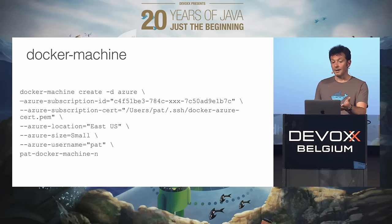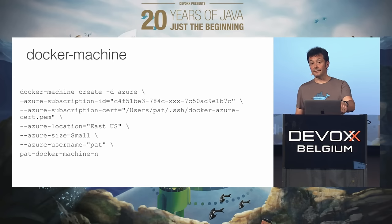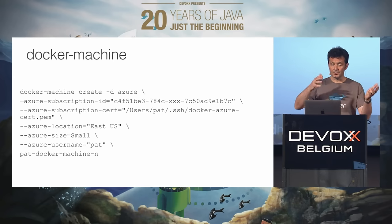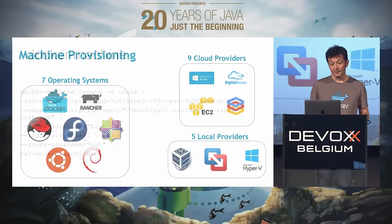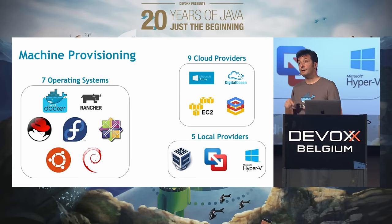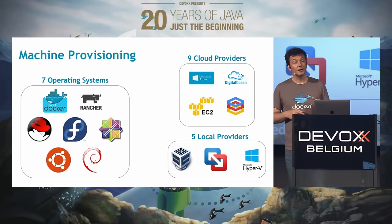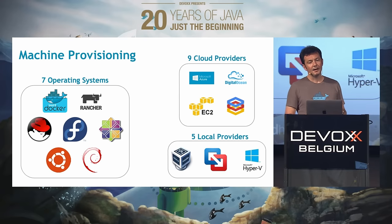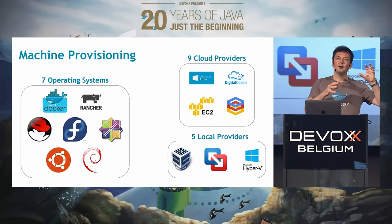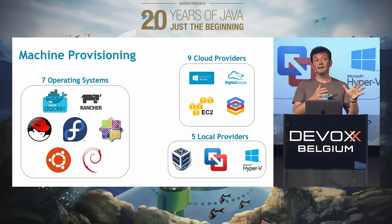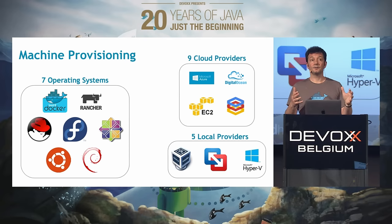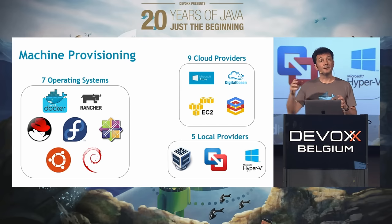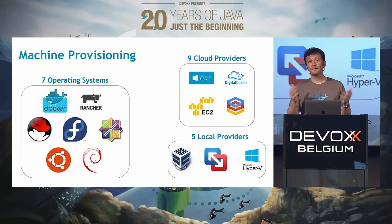It makes it super easy to switch machines and provision machines on the fly and destroy them when you don't need them. Here's an example of creating one on Azure using the Azure driver — you specify the region, certificate, subscription ID, and a name. The last release of Docker Machine, version 0.5, Nathan refactored machine pretty profoundly. Before, all the drivers were in a single codebase; now he created a plugin architecture where plugins for each provider live in their own codebase and are assembled by machine at runtime.